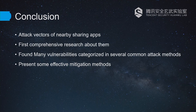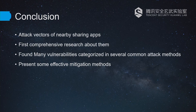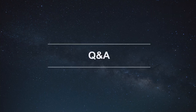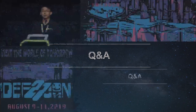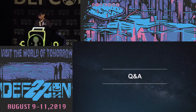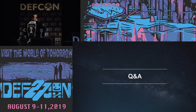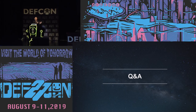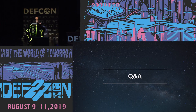Now, this is our conclusion. We analyzed the attack vectors of nearby sharing apps and did the first comprehensive research about them. We found many vulnerabilities and categorized them into several common attack methods. Finally, we presented some effective mitigation methods. Thank you. The mitigations will be deployed on many apps, but we can't tell which app is secure because the vendors didn't want to say. Thank you.